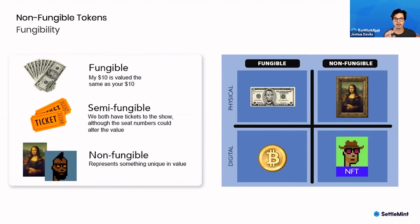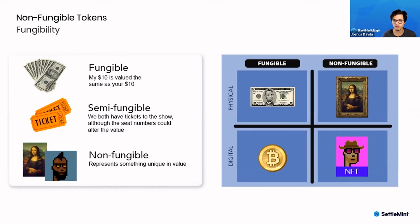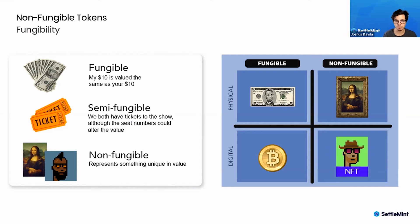What blockchain has been able to do with non-fungible tokens is bring this property of non-fungibility into the digital space. Just like with cryptocurrencies like Bitcoin, which bring fungibility into the digital space — one Bitcoin is equal to one other Bitcoin — you can now do the same thing but with non-fungible tokens. Art is a really big example of non-fungibility.